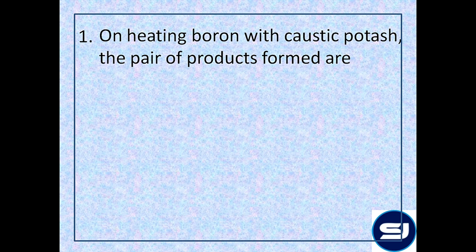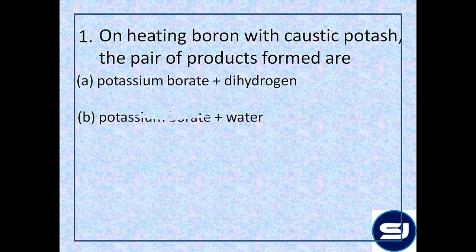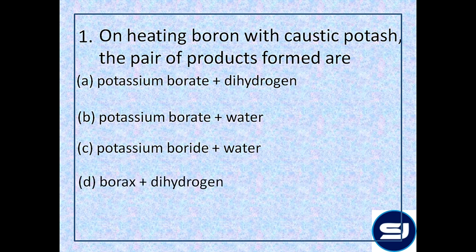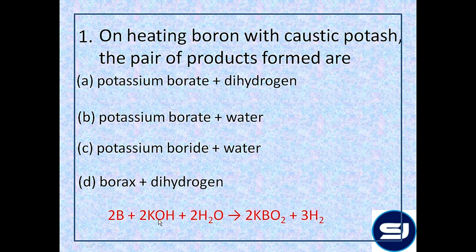First question: on heating boron with caustic potash (KOH), which pair of products is formed? Options are: (A) potassium borate and dihydrogen, (B) potassium borate and water, (C) potassium boride and water, (D) boric acid and dihydrogen. When boron reacts with KOH in aqueous medium, it forms KBO2 (potassium metaborate) and evolves dihydrogen gas. The answer is option A.